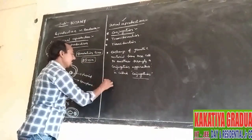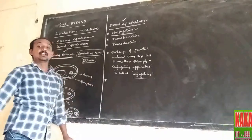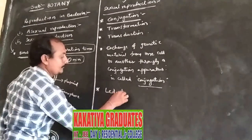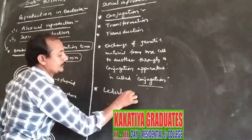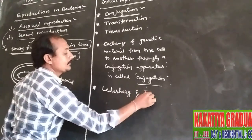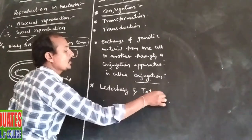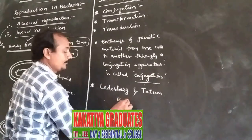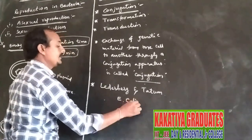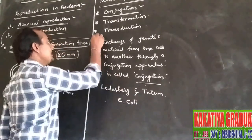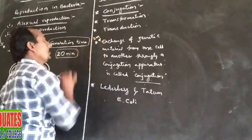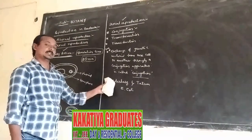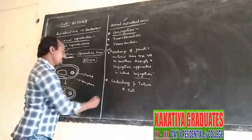Conjugation was discovered by Lederberg and Tatum in Escherichia coli, or E. coli. For two marks: conjugation is the exchange of genetic material from one bacterium cell to another through a conjugation apparatus, discovered by Lederberg and Tatum in E. coli.